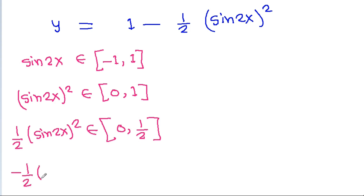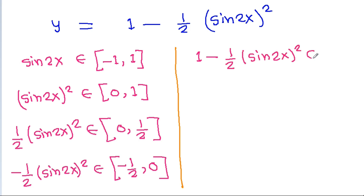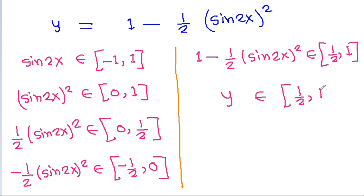Now, -(1/2)·sin²(2x) ranges from -1/2 to 0. Adding 1, we get y = 1 - (1/2)·sin²(2x) ranging from 1/2 to 1. Therefore, the range of y is [1/2, 1].